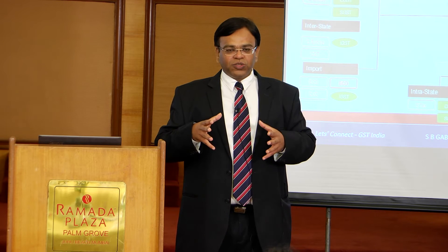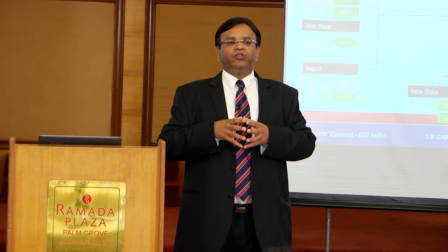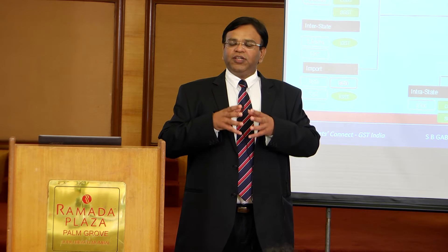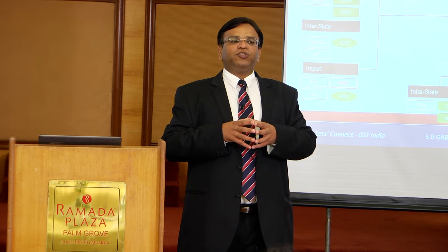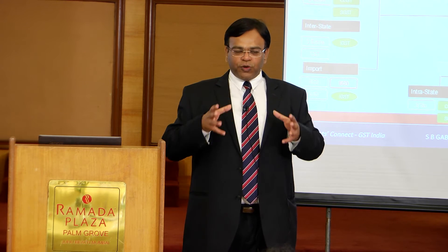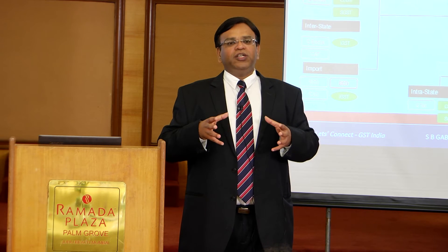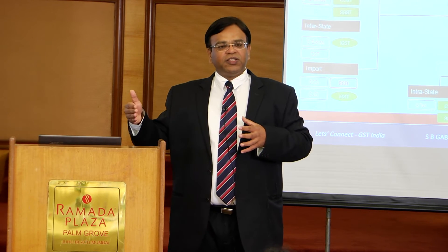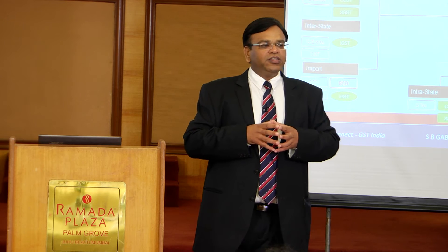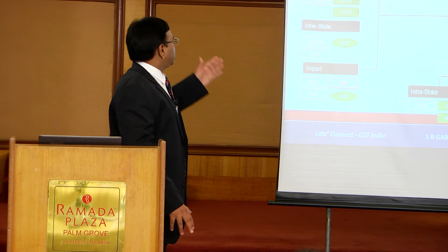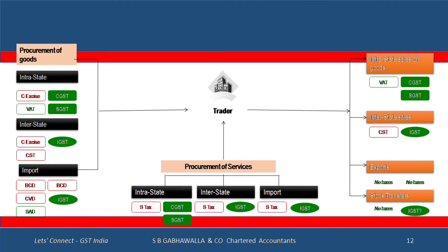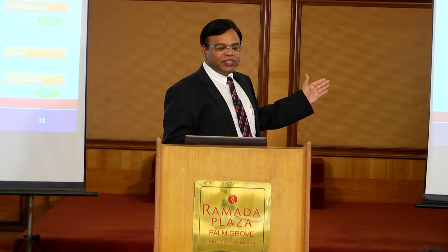All those details available in the first-stage dealer invoice — that is a big challenge that goes away. A trader will be in a position to safeguard his profits and his sourcing patterns. He may be sourcing from ten places and not need to mention it or require a dealer registration — that is a big advantage. On interstate purchases, both excise and CST become a cost today; against that you have IGST which is fully creditable — clearly a big positive.